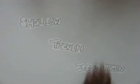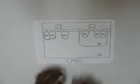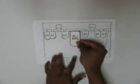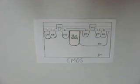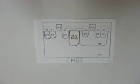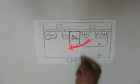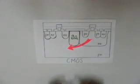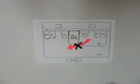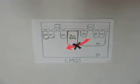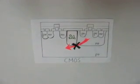Step 6: Shallow Trench Isolation. Shallow Trench Isolation is used to provide isolation between devices by forming trenches that are filled with silicon dioxide. Through this isolation, leakage current and any unexpected interactions between devices can be avoided. We will be covering the methods on how to produce STI.